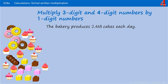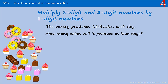This time we're going to do exactly the same, but we're using a 4-digit number multiplied by a 1-digit number. The bakery produces 2,468 cakes each day. How many cakes will it produce in 4 days? So we take the number of cakes each day — 2,468 — and multiply it by the number of days we're calculating, which is 4.